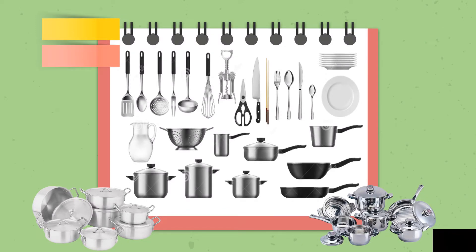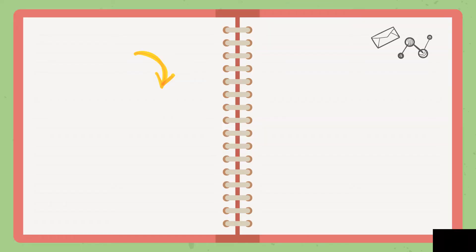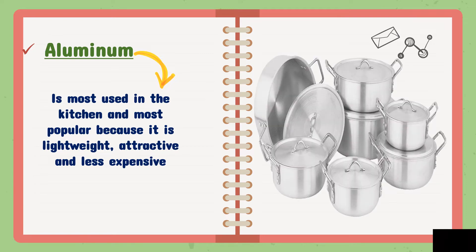Looking at the picture, these are kitchen tools that we can see in our kitchen or in our house. The following are types of cooking materials, kitchen utensils, and equipment commonly found in the kitchen. Number one is aluminum. It is most used in the kitchen and most popular because it is lightweight, attractive, and less expensive. These are common items we have at home — lightweight and the most affordable materials.